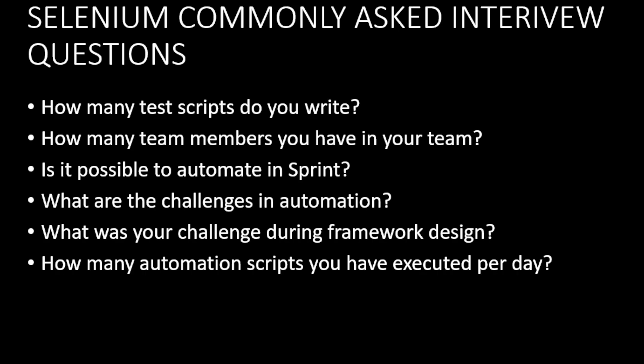The next question is: how many team members do you have in your team? The answer is: in my company we are following agile methodology. We have smaller teams where some persons are responsible for functional testing, automation, and performance. In my scrum team there were 7 members — out of 7, there are 2 QA engineers and 2 testers responsible for functional testing, automation, performance, and finally delivering the product to market.